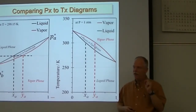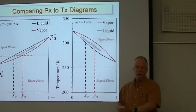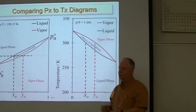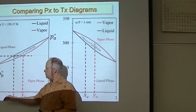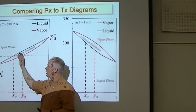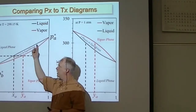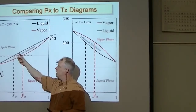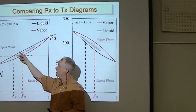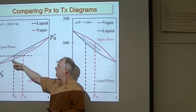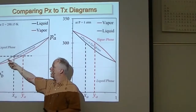If I have a composition that is rich in A — because A has a higher pressure — it would boil at a lower temperature. A composition rich in B would boil at a higher temperature.